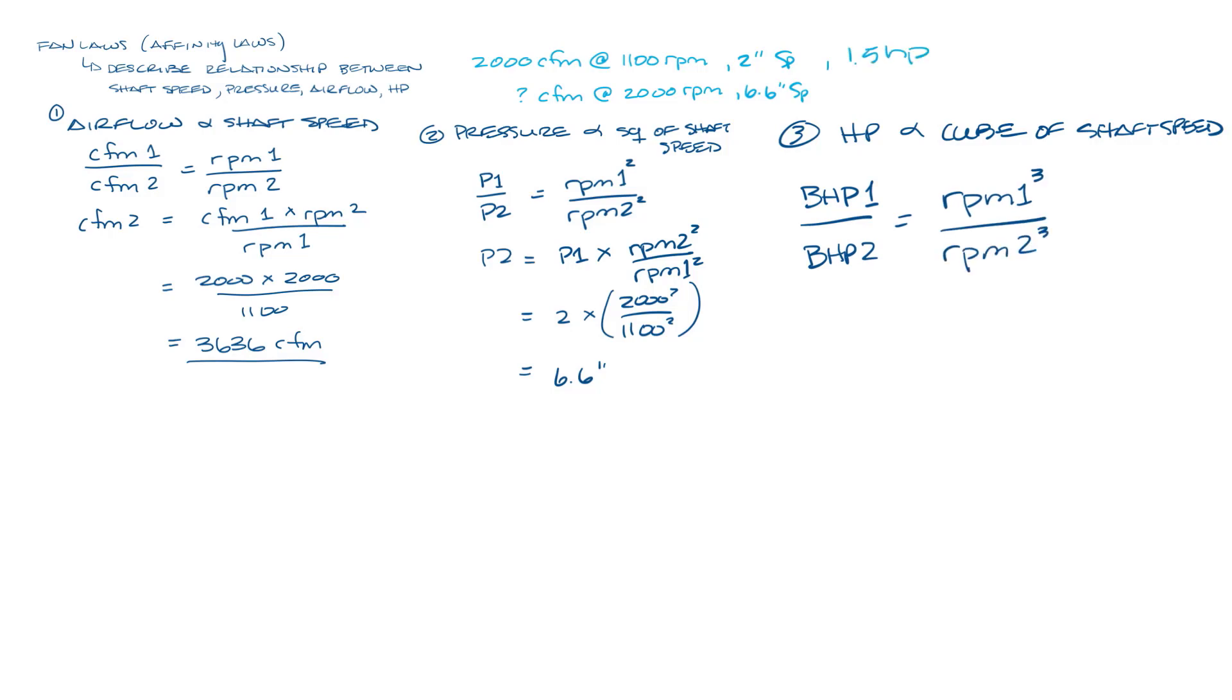So let's just say this is a one and a half horsepower motor. We get our equation for brake horsepower 2 equals brake horsepower 1 times RPM2 cubed over RPM1 cubed. Plug in 1.5, 2100 and we get about 9 horsepower.